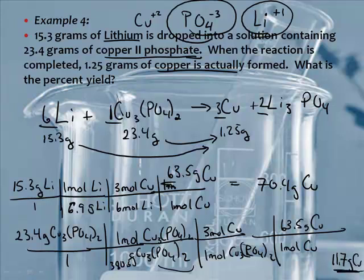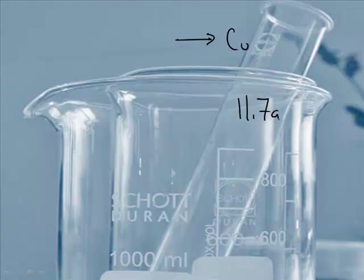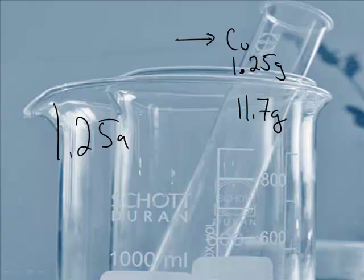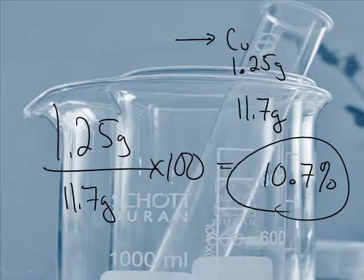Well, the lower number is 11.7, right? So I'm expecting to make 11.7 grams, because that's the limiting reactant. But I only made 1.25 grams. Not a very good yield. So what would you do? Well, you'll take 1.25 grams divided by 11.7 grams times 100. 10.7 percent. The unit is percent on this one.